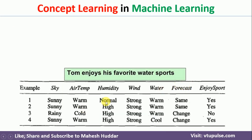Let us assume that we have been given some set of data. We were given four examples with six attributes — sky, air temperature, humidity, wind, water and forecast — and 'enjoy sport' is the target label. Given this data, we want to know when a particular person will enjoy this sport and when they will not.